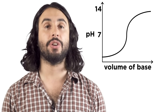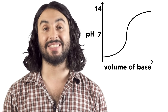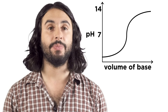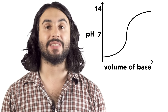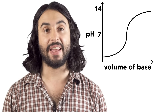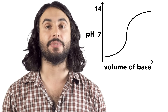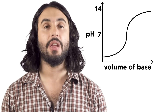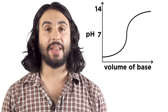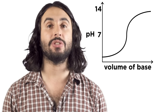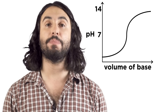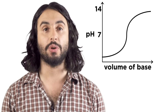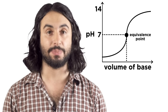On a titration curve for an acidic solution, pH is plotted against the volume of base that is progressively added. As we add base, the pH slowly rises, then sharply rises towards the equivalence point.